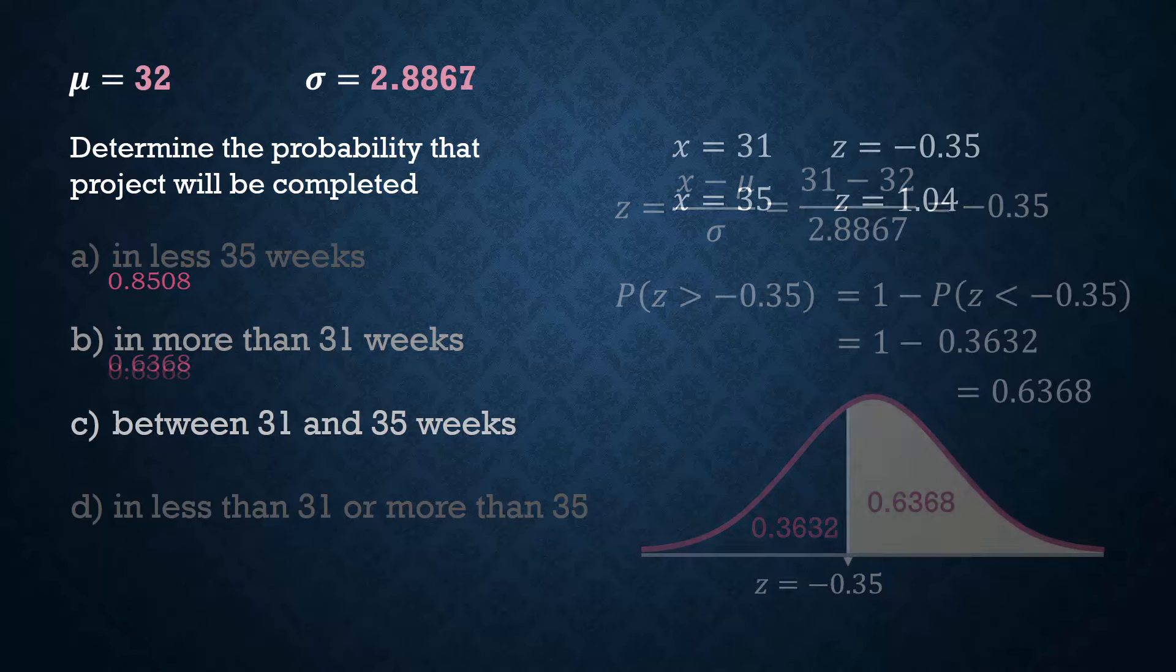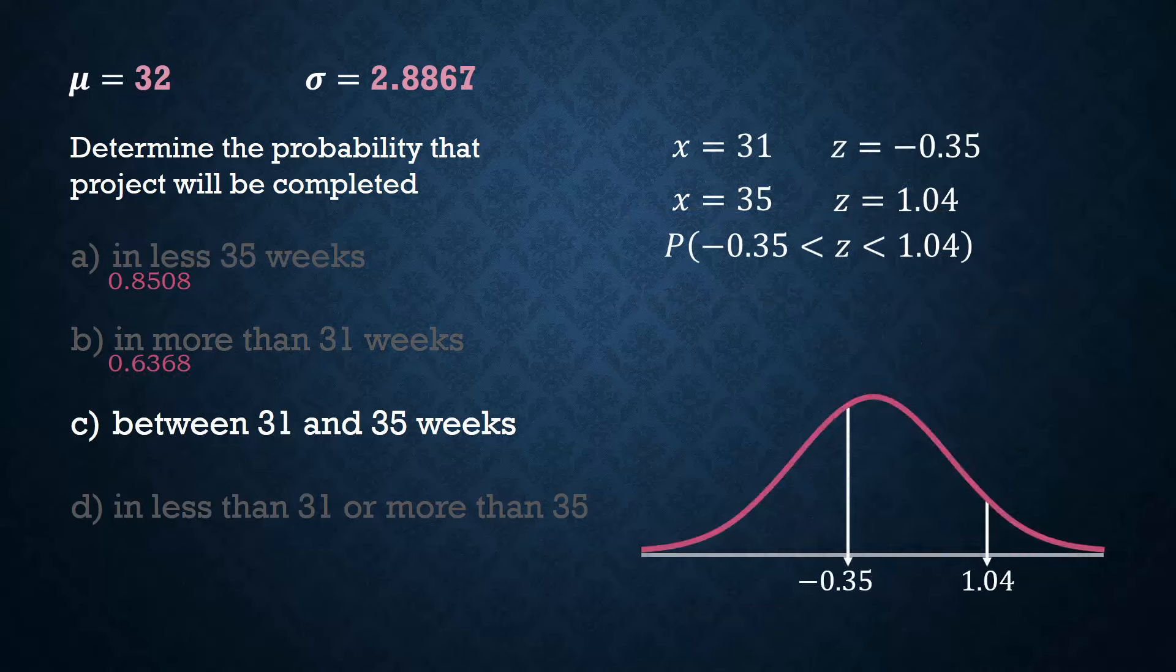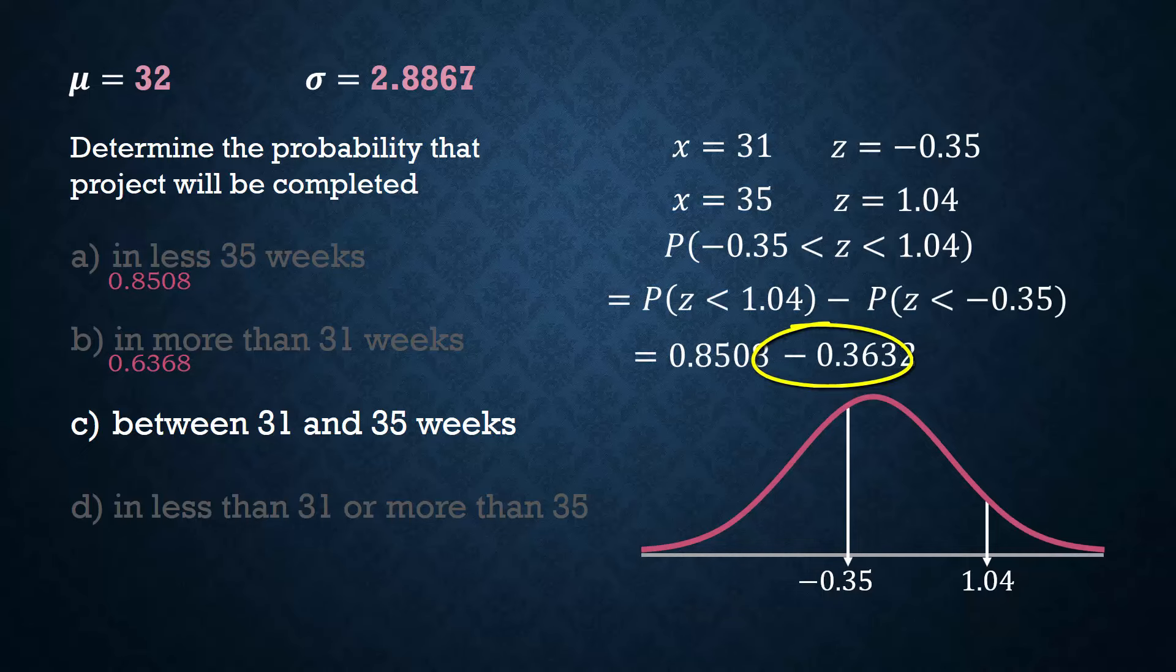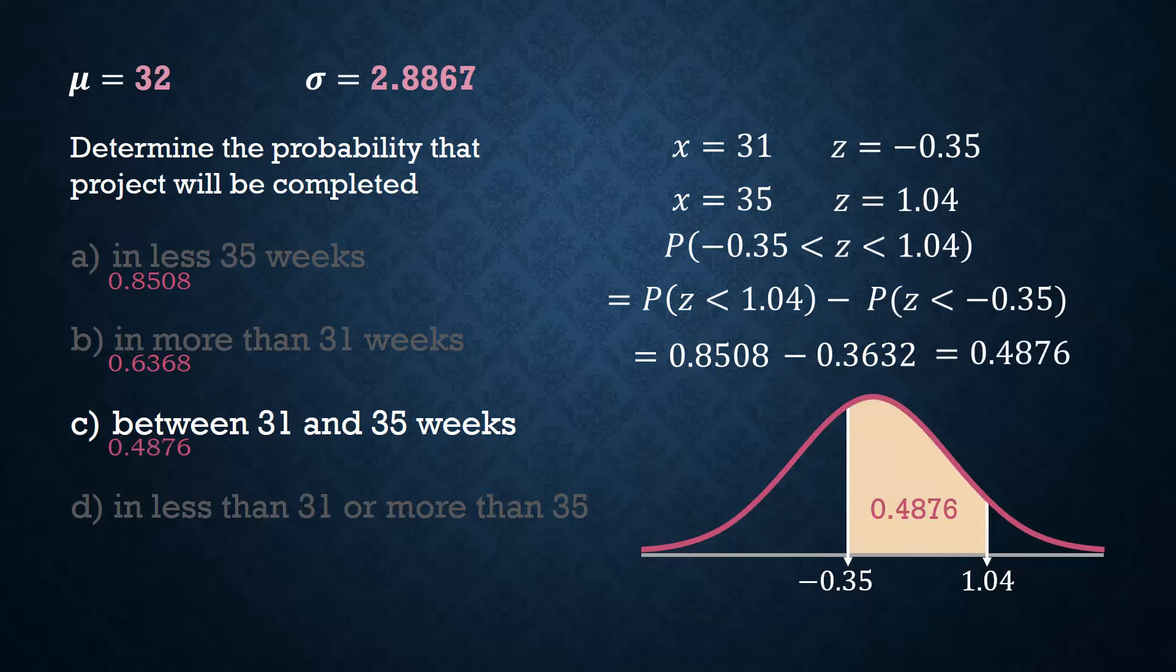Between 31 and 35, we find the area between the z values of negative 0.35 and 1.04 by subtracting the smaller area from the larger one. And that gives 0.4876.